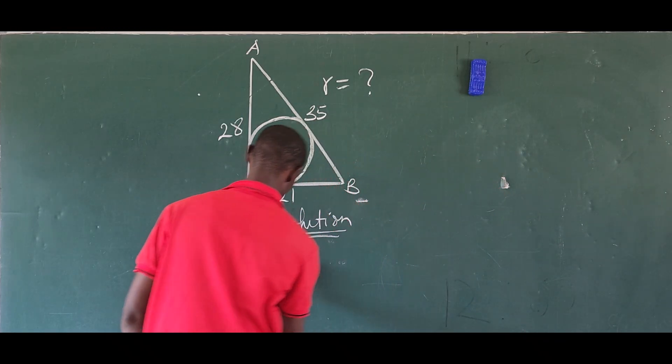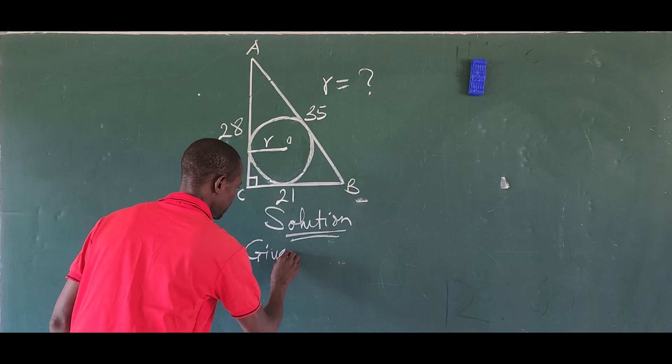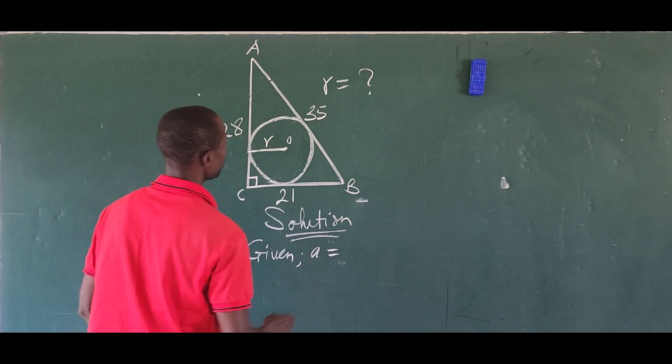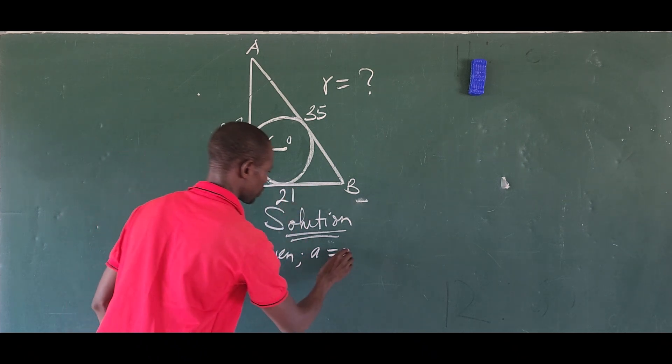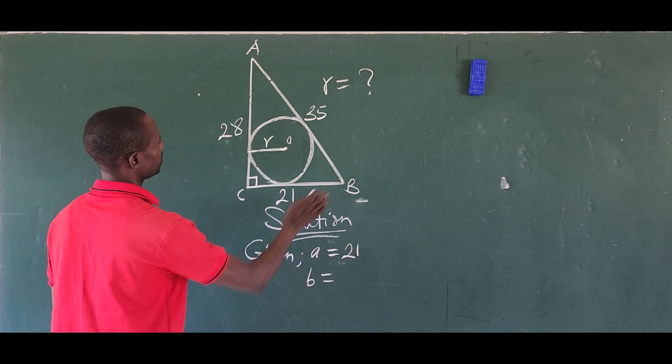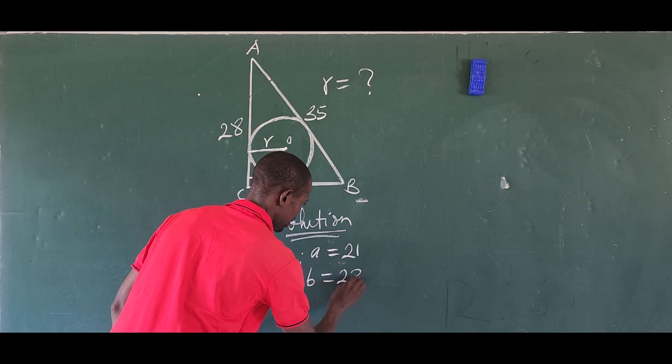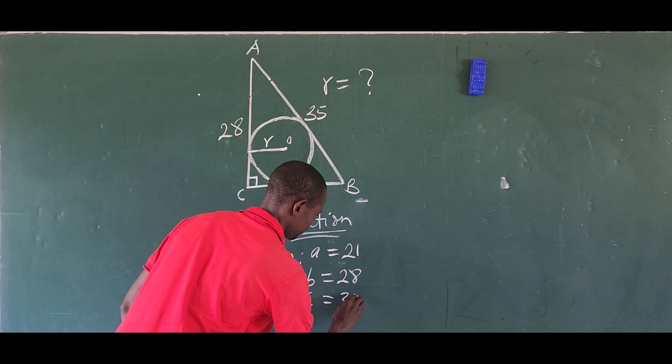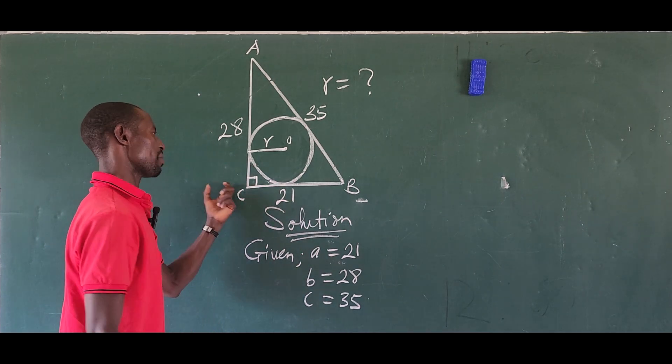So from here, let's take the quantities given. We have a equals 21, b equals 28, and c equals 35. The angles are not given apart from angle C, but we're not bothered about that.